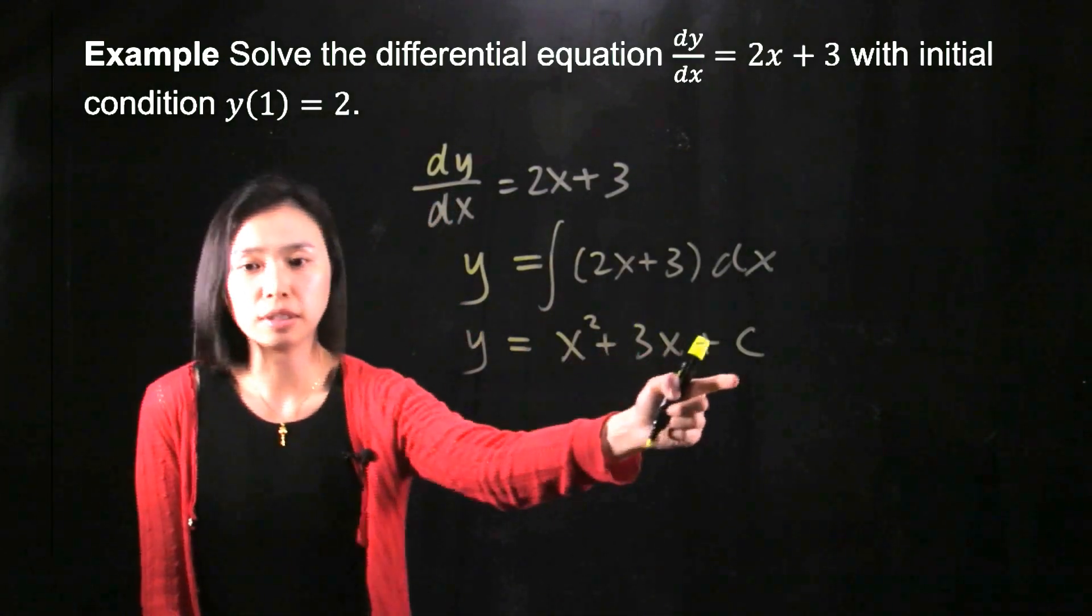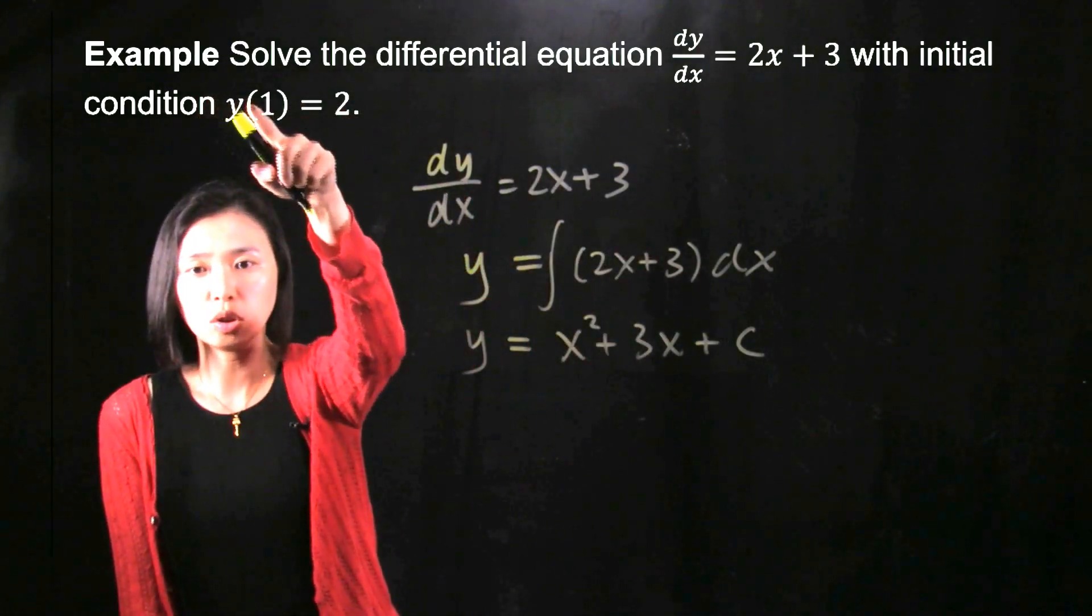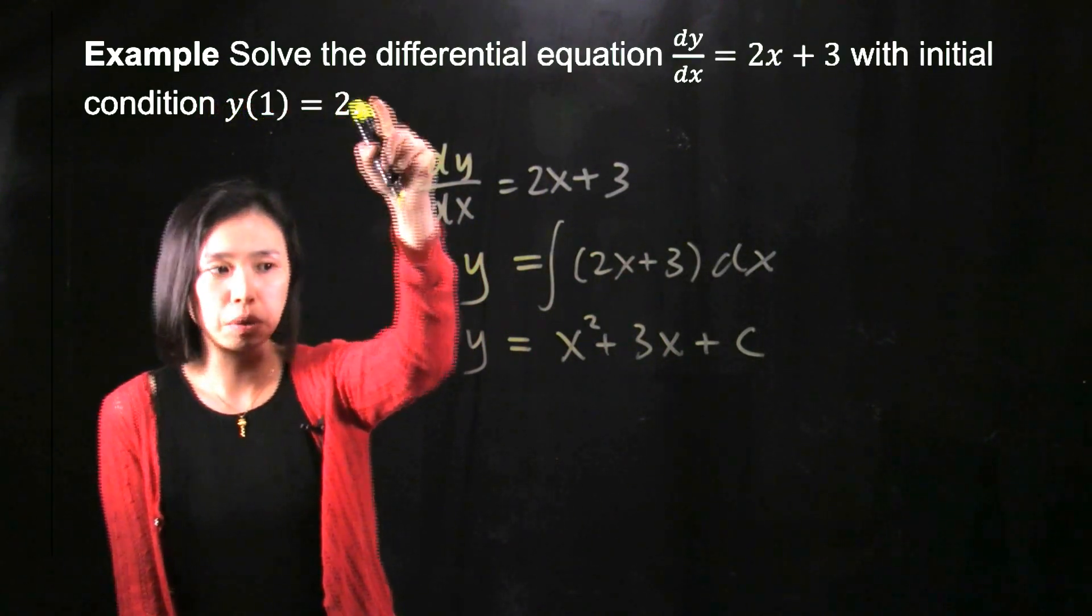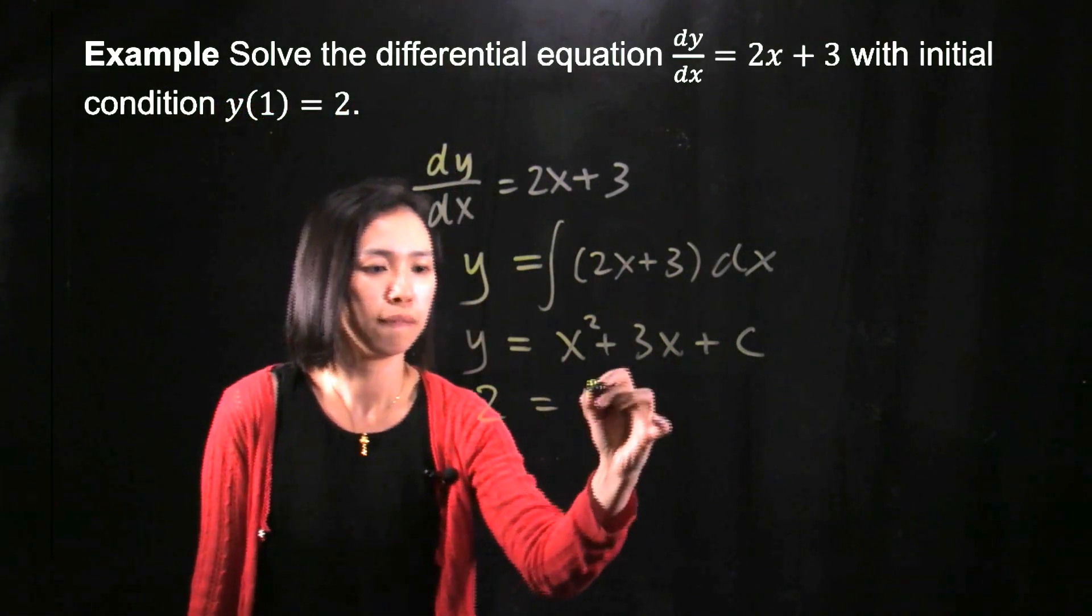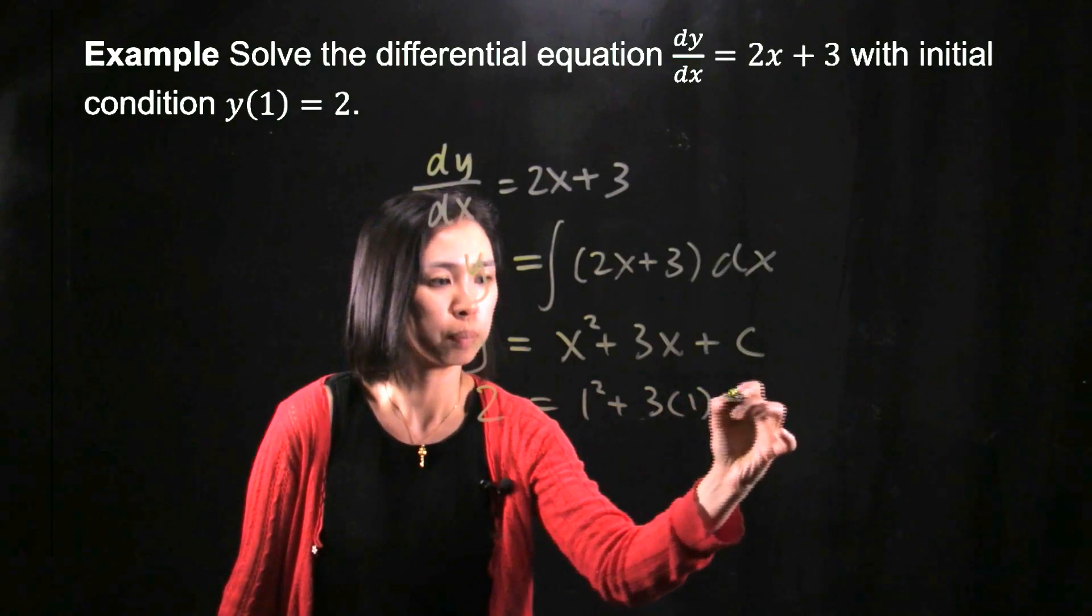All right, so how can we find this C? We need to go back to the initial condition. We see that when x is 1, then y would be 2. So 2 equals 1 squared plus 3 times 1 plus C.